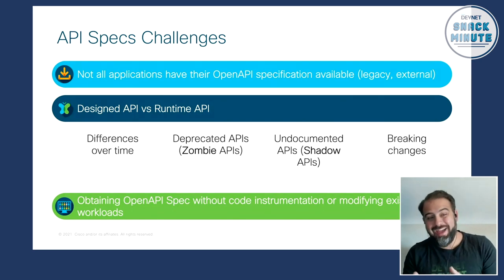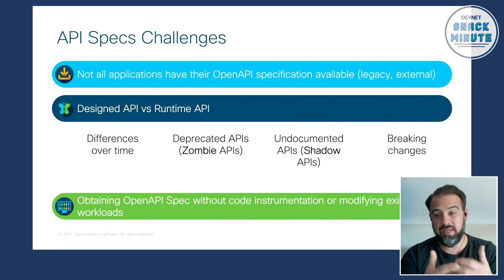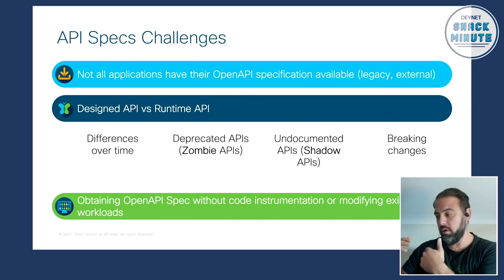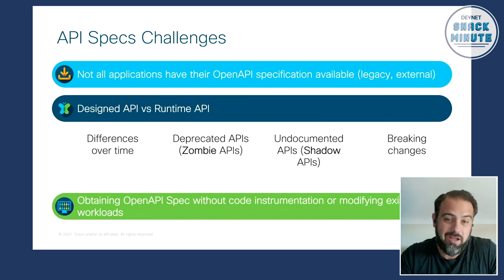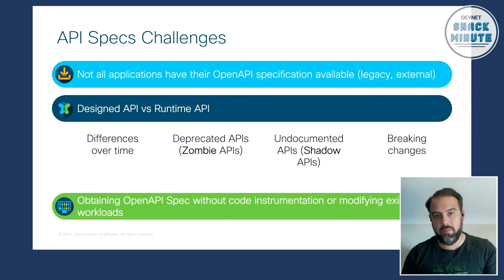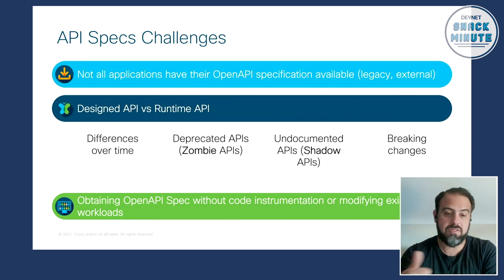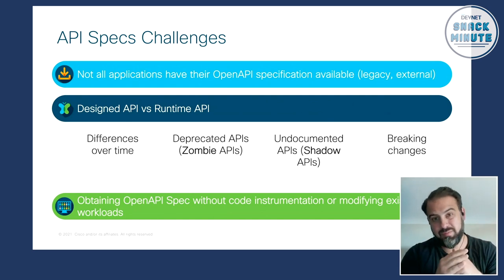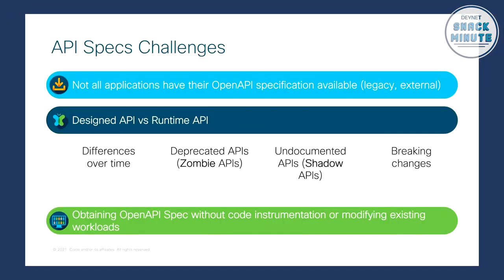Some of the challenges that come along with that is that not all applications have their OpenAPI specification available — either legacy applications where people didn't take the time to do that, or external applications we don't have control over. This causes a disconnect between the designed API and the runtime API. We could run into differences over time: deprecated or changed APIs called zombie APIs, undocumented ones called shadow APIs, and then breaking changes added to something. Obtaining that OpenAPI spec without code instrumentation causes these disconnects between the intended designed API versus the runtime.